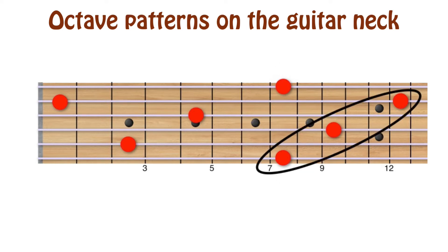Now from the sixth string, we followed the exact same formula as we did from the fifth string: two strings over two frets up, followed by two strings over three frets up. This takes you all the way to the second string 13th fret.